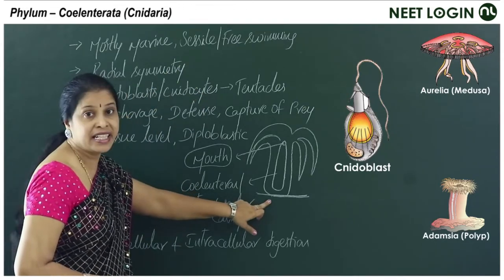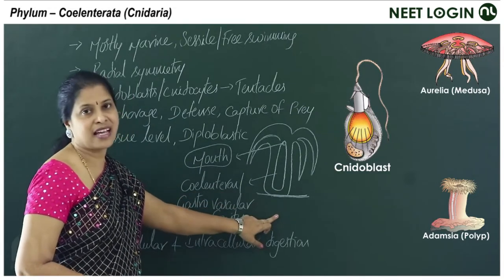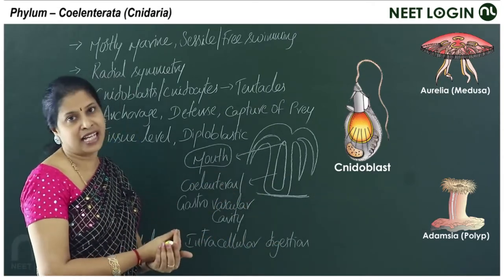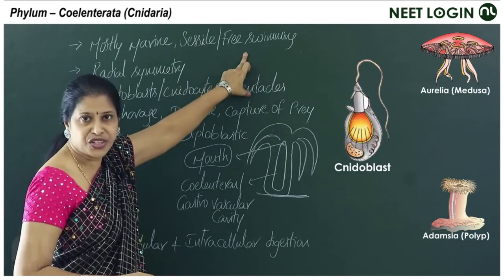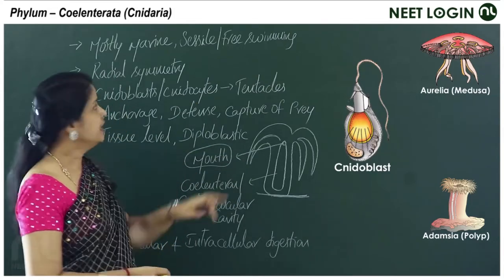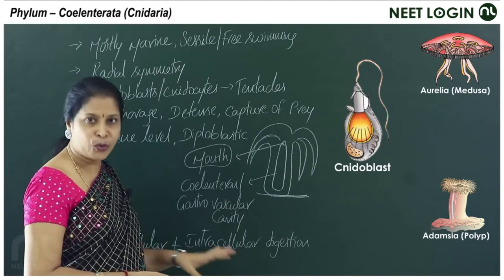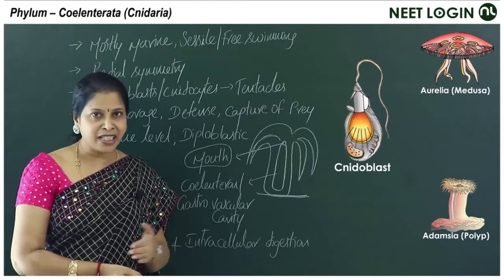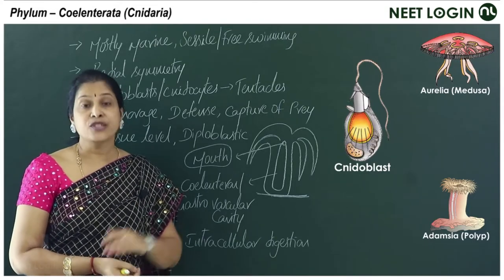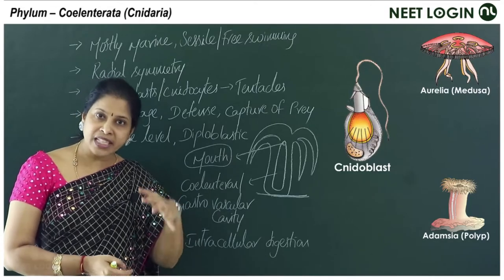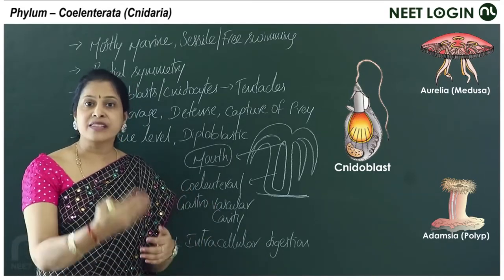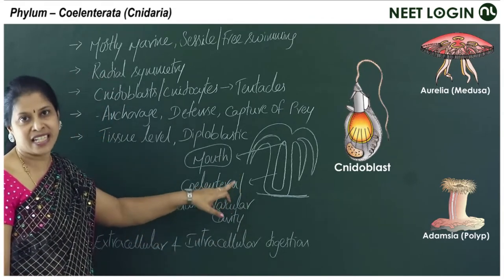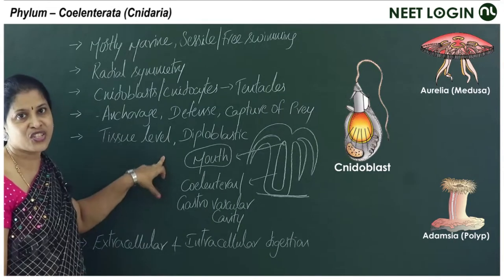Cnidarians are the earliest eumetazoans — the true animals with tissues seen for the first time in this phylum. They exhibit tissue level of organization and are diploblastic, with two germinal layers: outer ectoderm and inner endoderm, with an undifferentiated mesoglea in between.